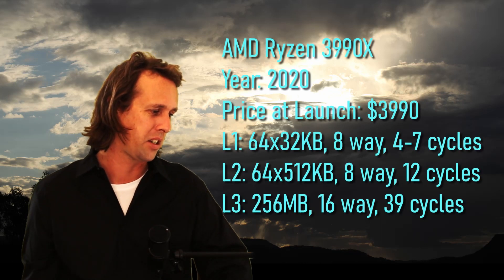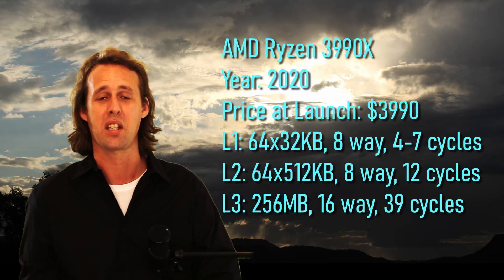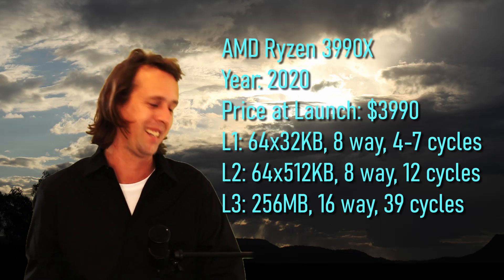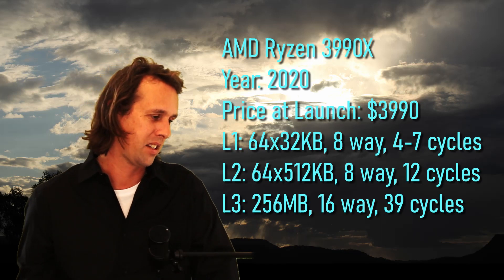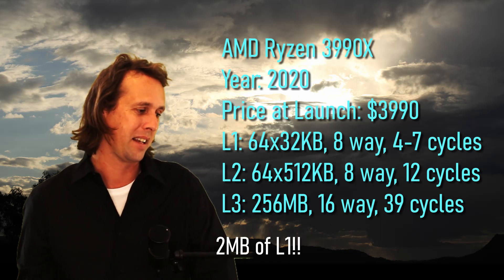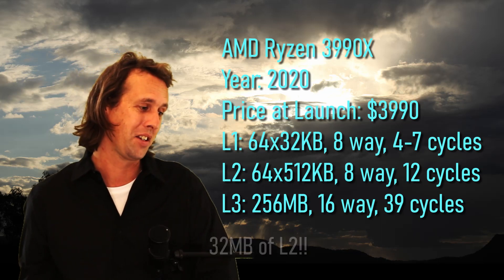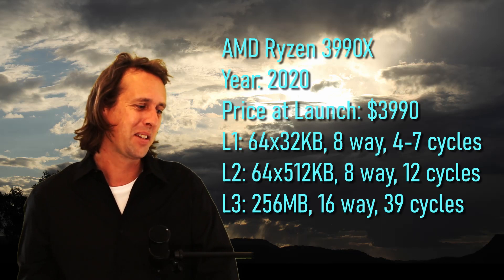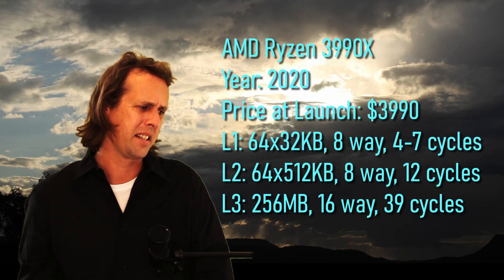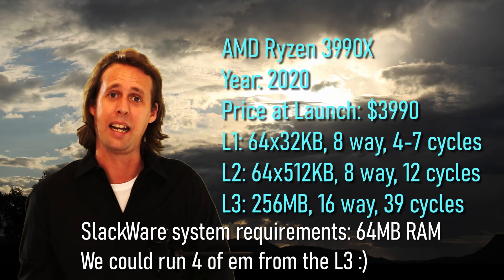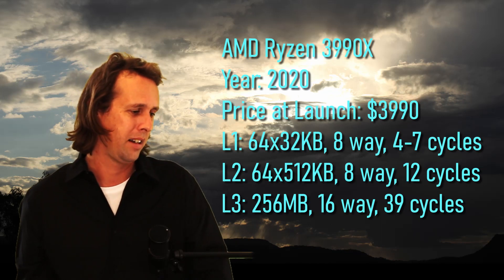The final one I put on here is the Threadripper 3990X — the silliest CPU I was able to find for sale, and it costs as much as three houses. It's a 64-core monster: 32 kilobytes of L1 per core, 8-way set associative and 4 to 7 cycles. It has 64 by 512K L2s, 8-way set associative and 12 cycles. The L3 is 256 megabytes, 16-way set associative and 39 cycle access time — enough to store a Linux operating system, the whole thing while it's running, in your L3. It's going to absolutely fly. That's how you feed a 64-core Threadripper monster.